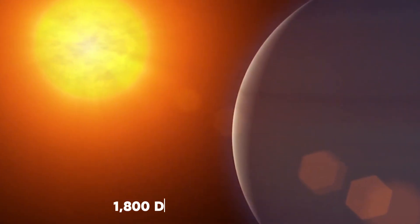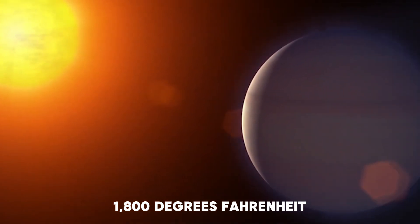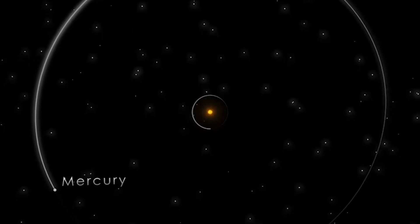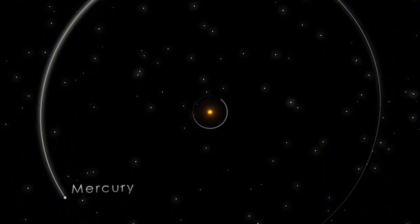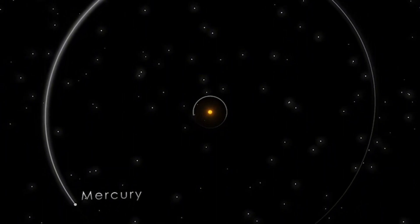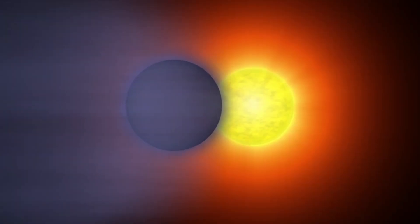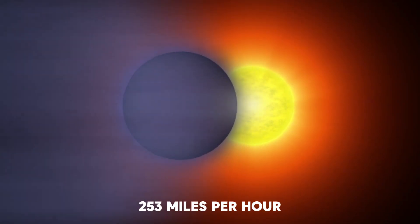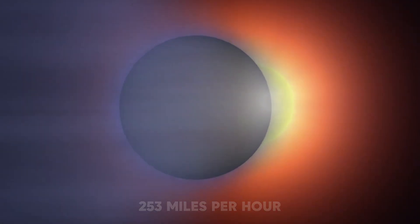That's 13 times closer than Mercury is to our Sun. The result? Temperatures reach a scorching 1,800 degrees Fahrenheit. But it's not the heat that makes this planet truly terrifying. It's the weather. Winds howl across the surface, 253 miles per hour.